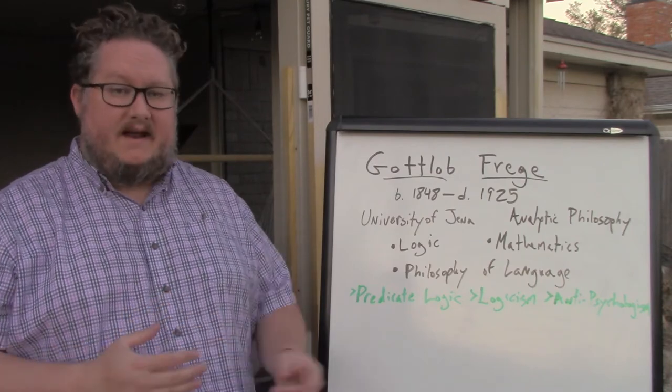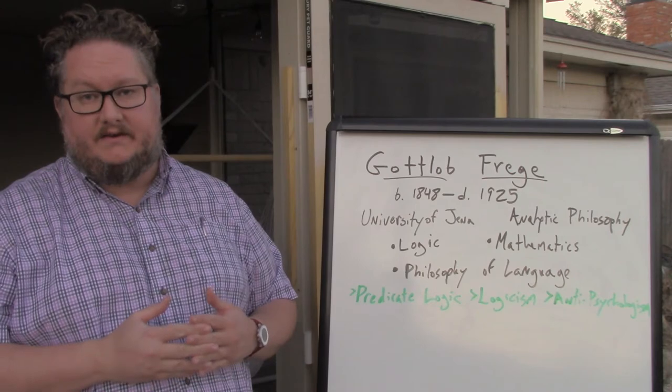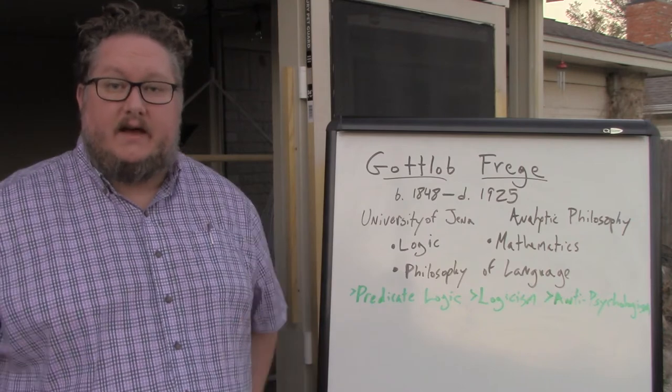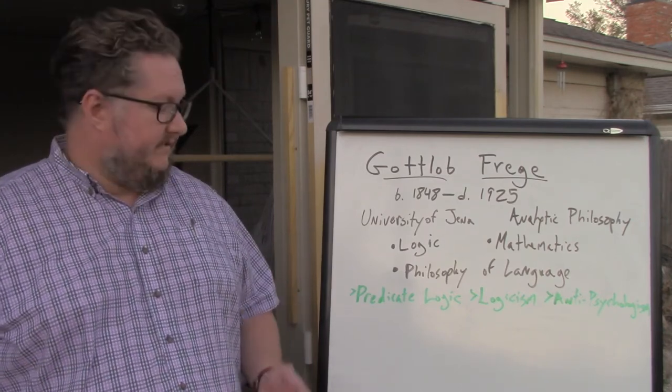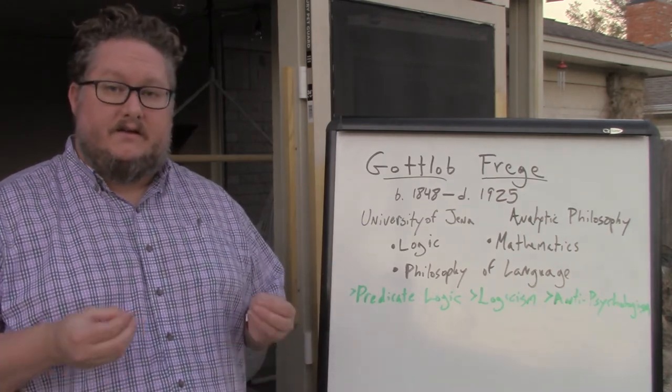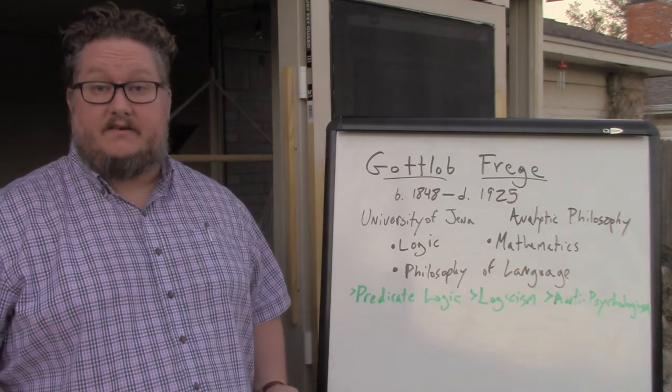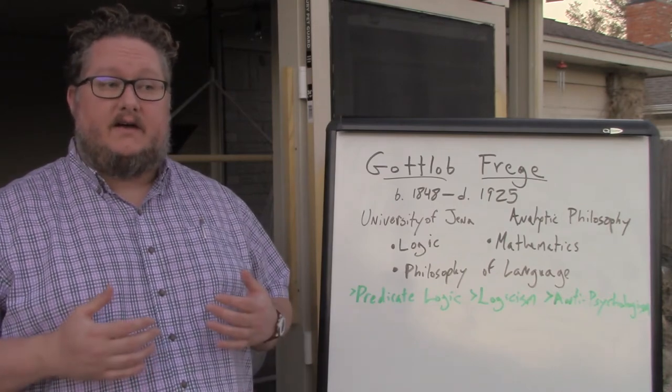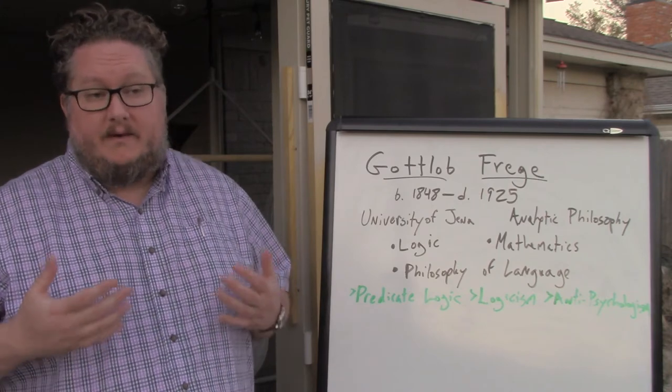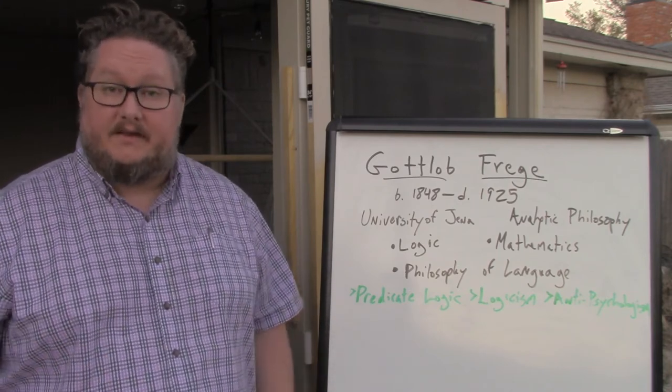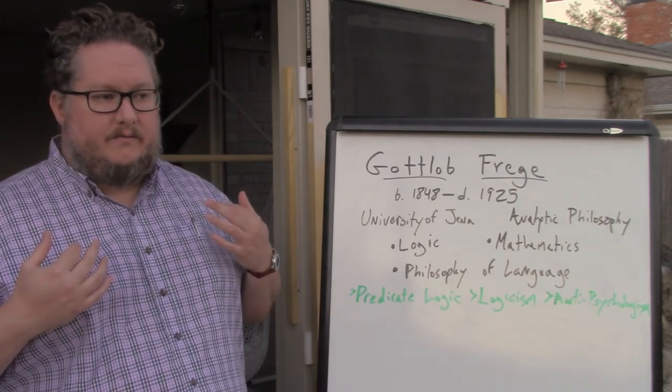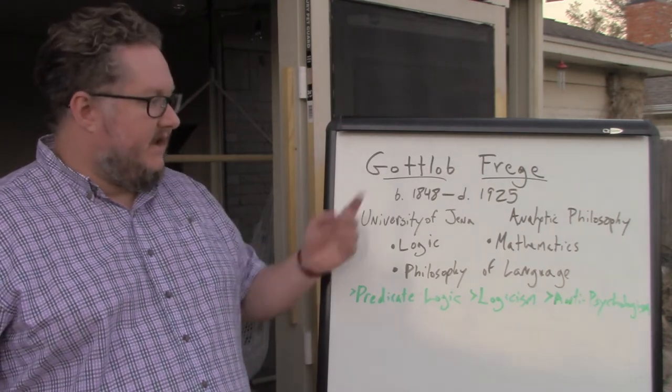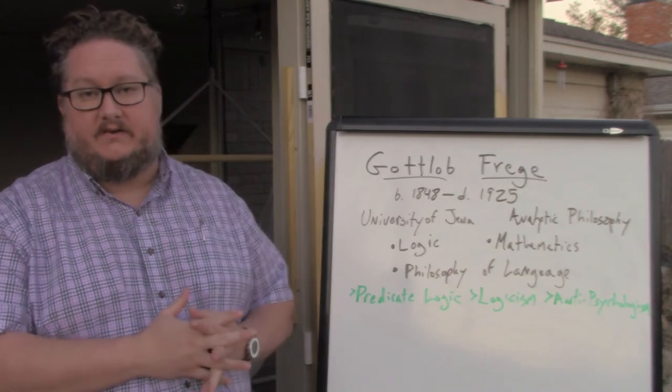In both logic and mathematics, Frege was a defender of what's called anti-psychologism. So he was strongly opposed to a philosophical trend of the late 19th century to attempt to provide foundations for things like logic and mathematics in psychology. I think we've talked before about how psychology became a really important part of the philosophical scene in the late 19th century. And by psychology, I mean, of course, empirical or experimental psychology. And there was a reaction against that towards the end of the 19th and the beginning of the 20th century, and Frege was perhaps one of the most important figures in that area.